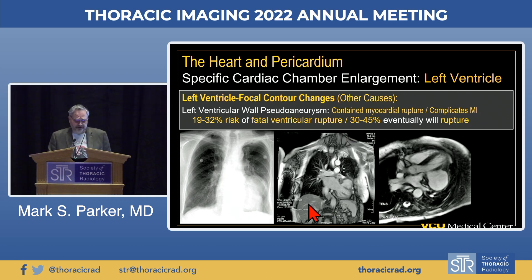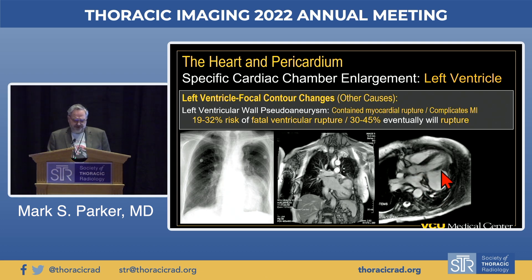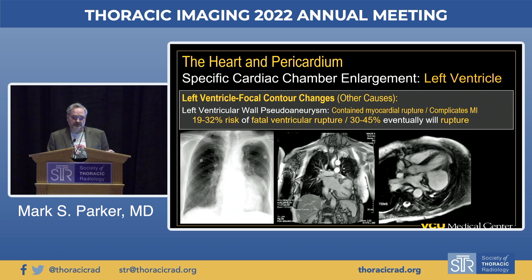A coronal white blood MRI image, equivalent to our frontal radiograph, shows the contour change created by the post-infarct pseudoaneurysm. On the three-chamber view with RV, LV, and outflow tract, we can see the pseudoaneurysm protruding posteriorly. It's important to recognize this on the radiograph and refer the patient appropriately, as these carry a very high risk of rupture and death if not treated.